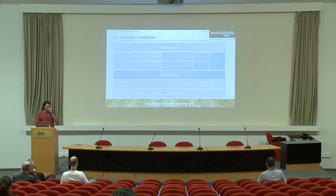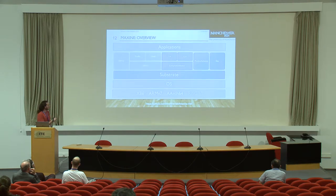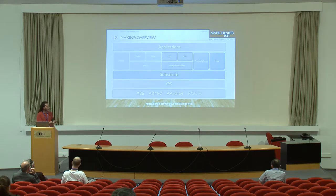Here is a high-level overview of our vision for Maxine. On the top layer we have applications — Java, Ruby, R, whatever is supported by Truffle. Then we have the memory management toolkit. We integrate Truffle and Graal over JVM-CI, and plan to keep the two compilers currently available in Maxine. There's also the monitor scheme, which allows experimenting with different locking and synchronization mechanisms, and tools for configuring how objects are stored in memory.